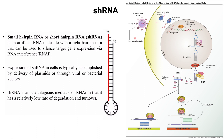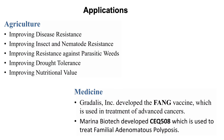shRNAs can be cloned into plasmids or viral vectors which are then transfected into the cells. Once inside, the shRNA is transcribed and processed into its active form. It functions similar to siRNA and miRNA except that we can decide which RNA it targets and we can artificially synthesize these molecules. These are used for silencing genes.